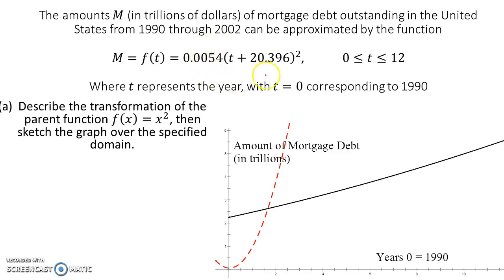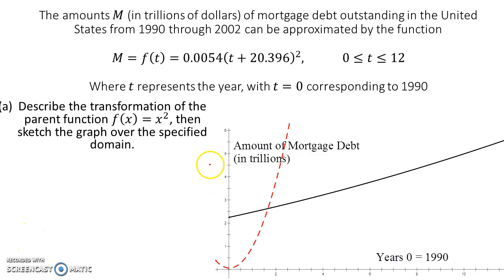When we look at a quadratic function in this form, what's inside the parentheses always represents a horizontal shift left or right, but it's the opposite direction of the sign. Since this sign is plus, we know it goes the opposite direction — it moved to the left. The coefficient in front is what controls how wide or narrow the parabola is, called horizontal or vertical stretching and shrinking.